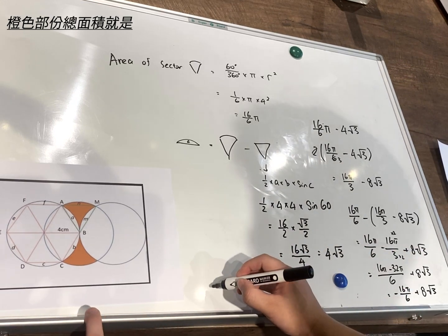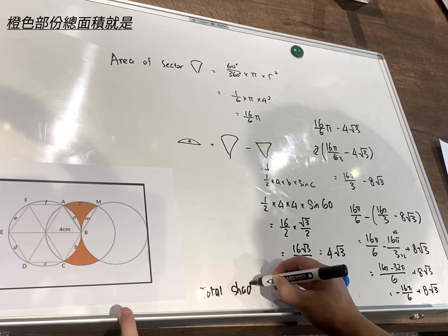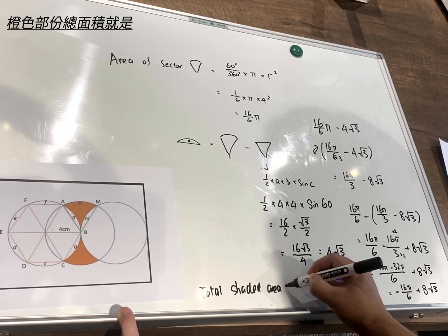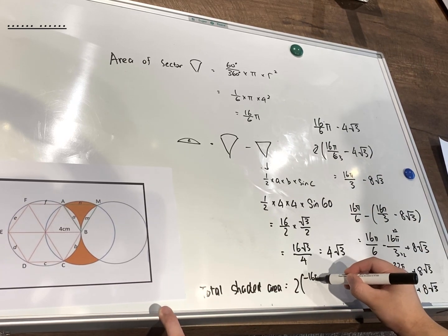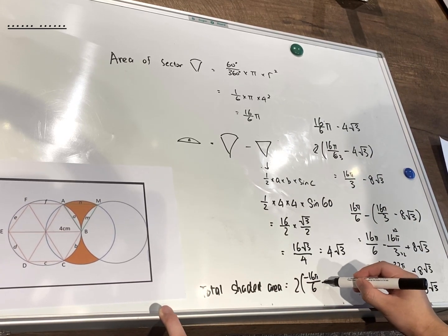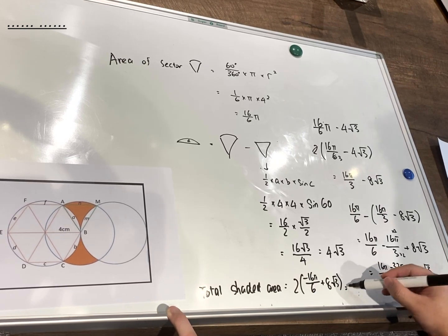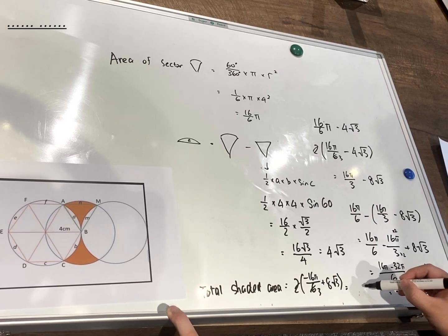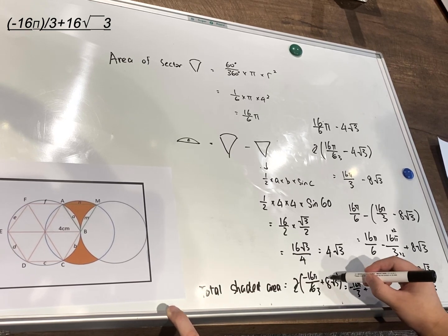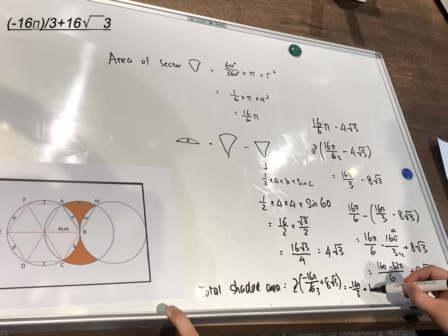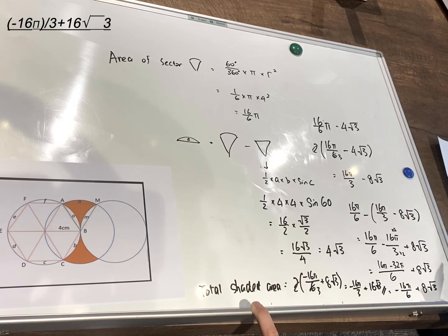To find both shaded areas, the total shaded area equals 2 times (negative 16π over 6 plus 8√3). Simplifying, this becomes negative 16π over 3 plus 16√3, which is our final answer.